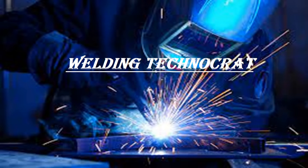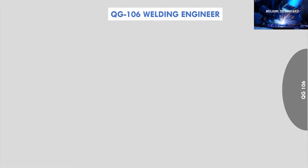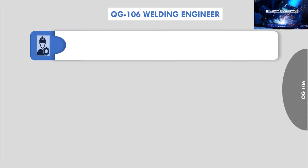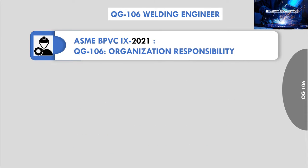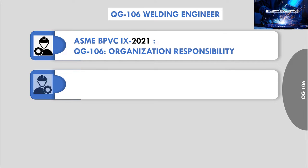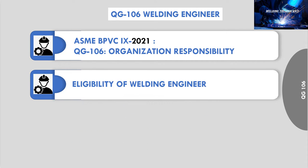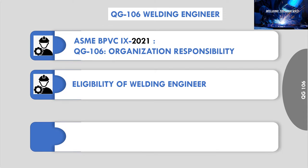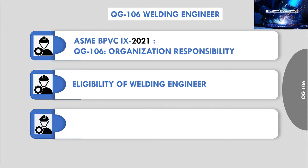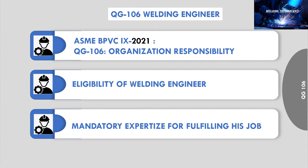Welcome to the Welding Technocrat YouTube channel. Hello, welding enthusiasts! ASME BPVC Section 9, 2021, QG106 Organization Responsibilities gives us guidelines for welding engineers. In this video, we are going to learn about the eligibility of welding engineers. A welding engineer is required to have mandatory expertise for fulfilling his job responsibilities. We will learn two things in detail about the welding engineer.